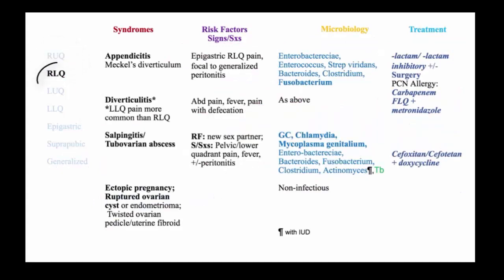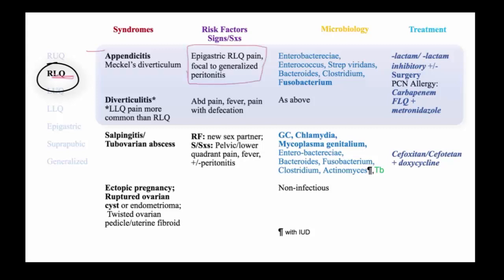Moving to right lower quadrant, the classic infectious surgical process is appendicitis, which begins with epigastric pain, radiating then finally to the right lower quadrant with focal peritonitis over the right lower quadrant, leading to generalized peritonitis if not recognized.